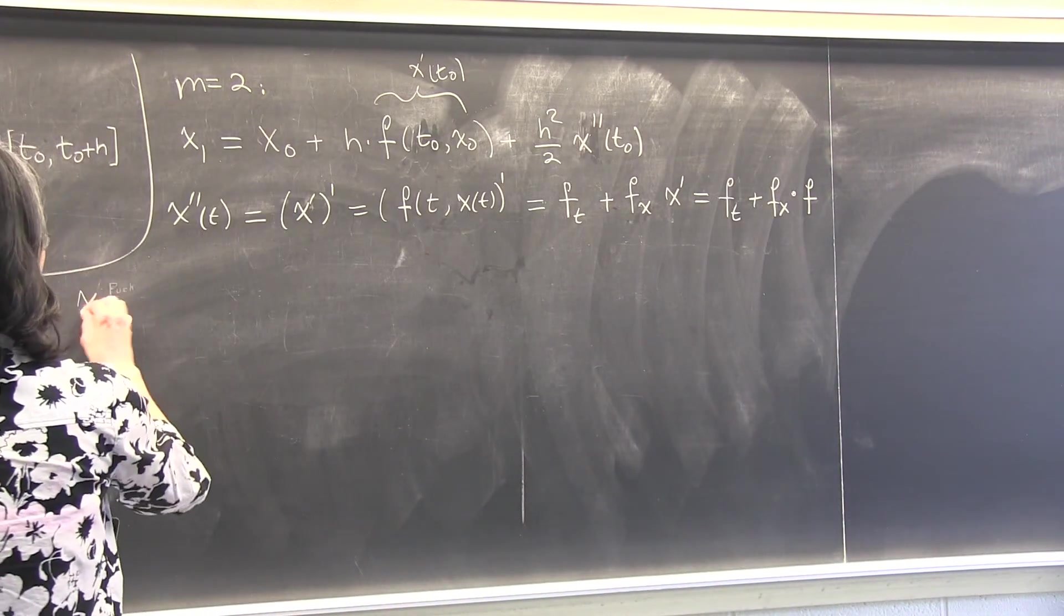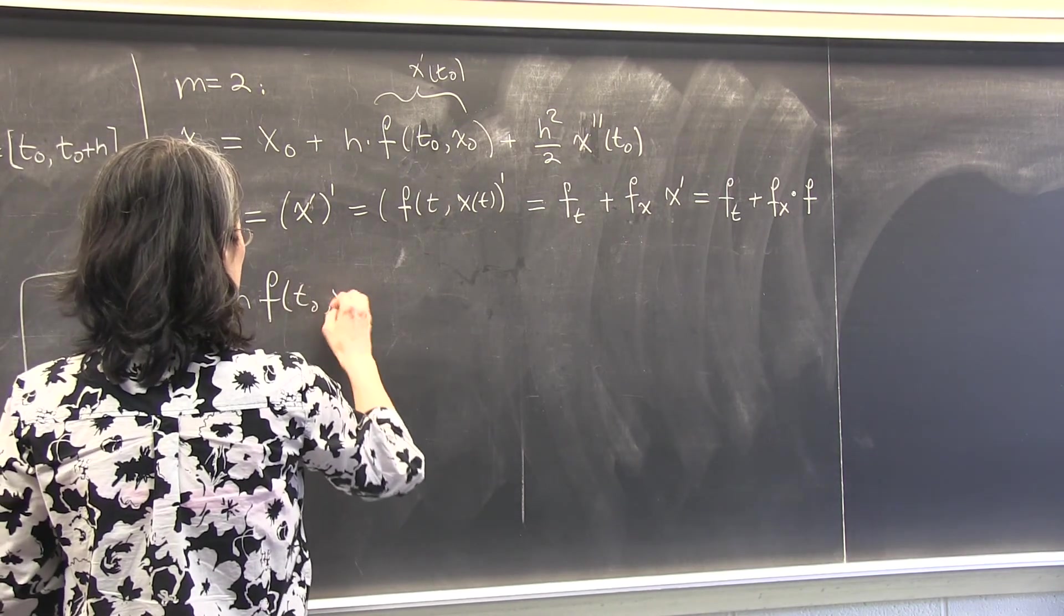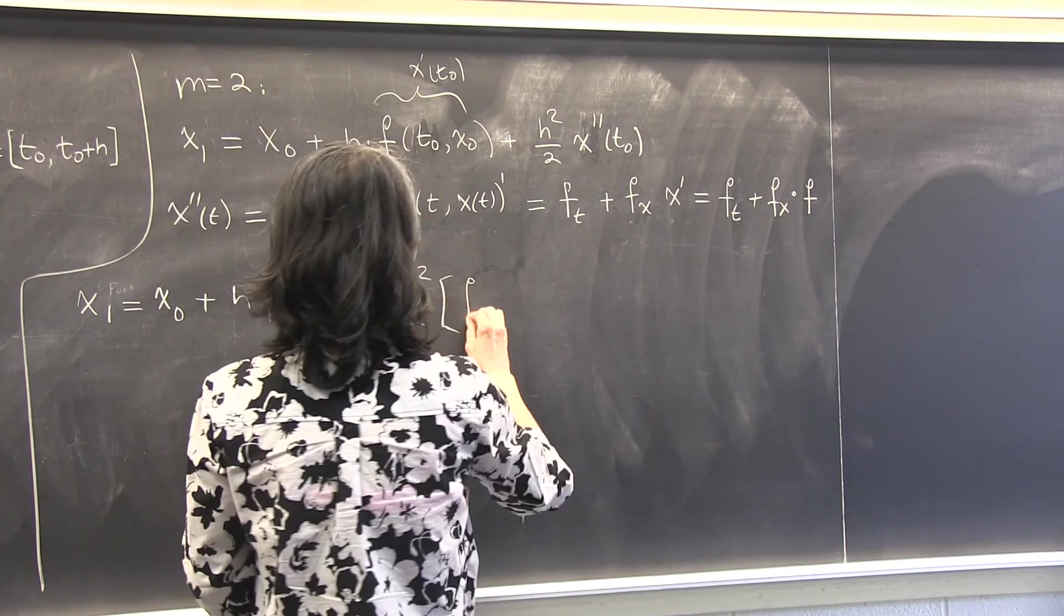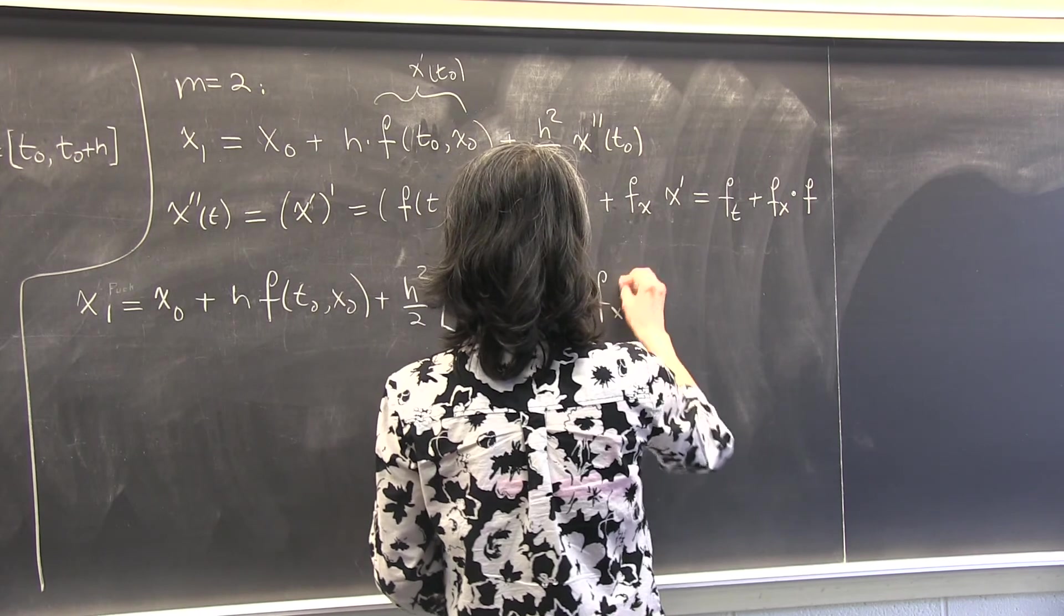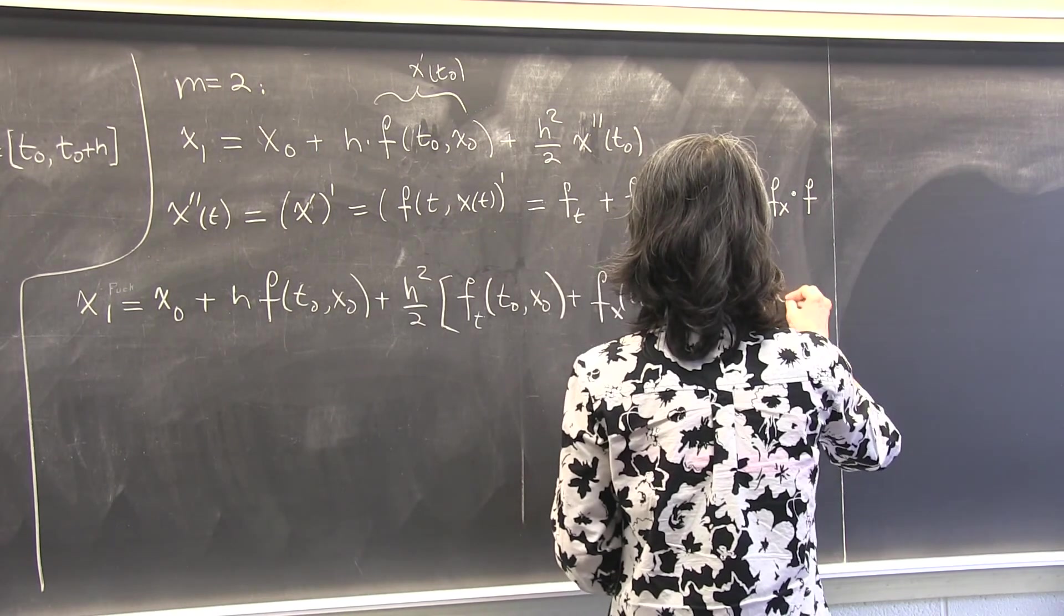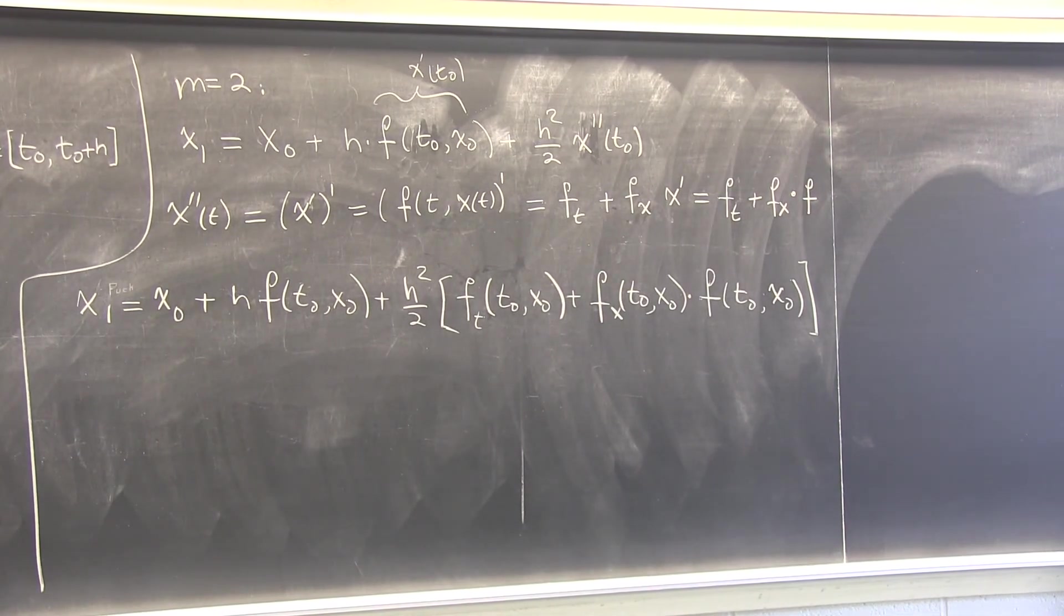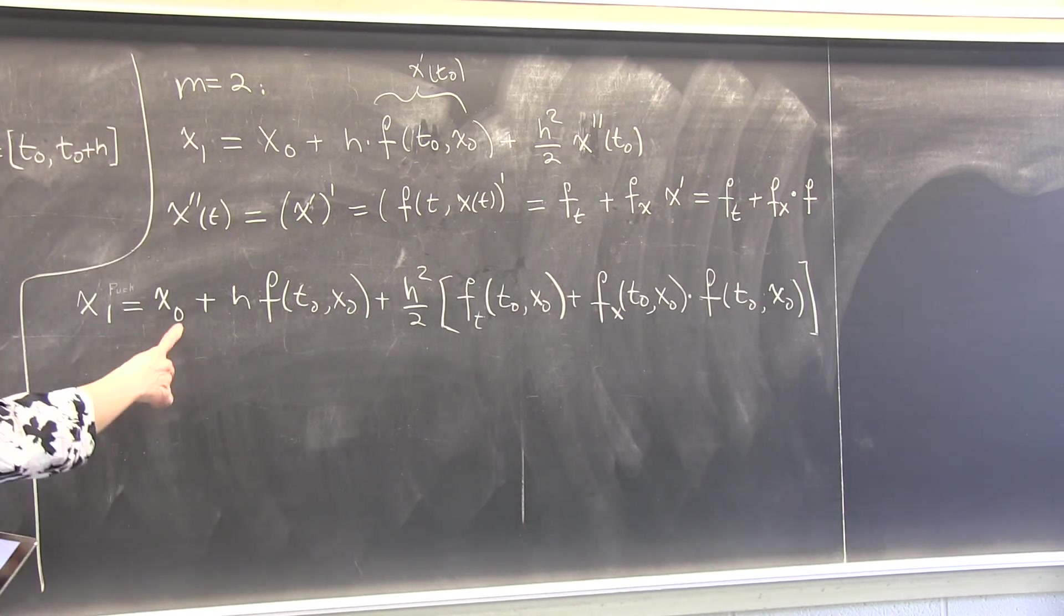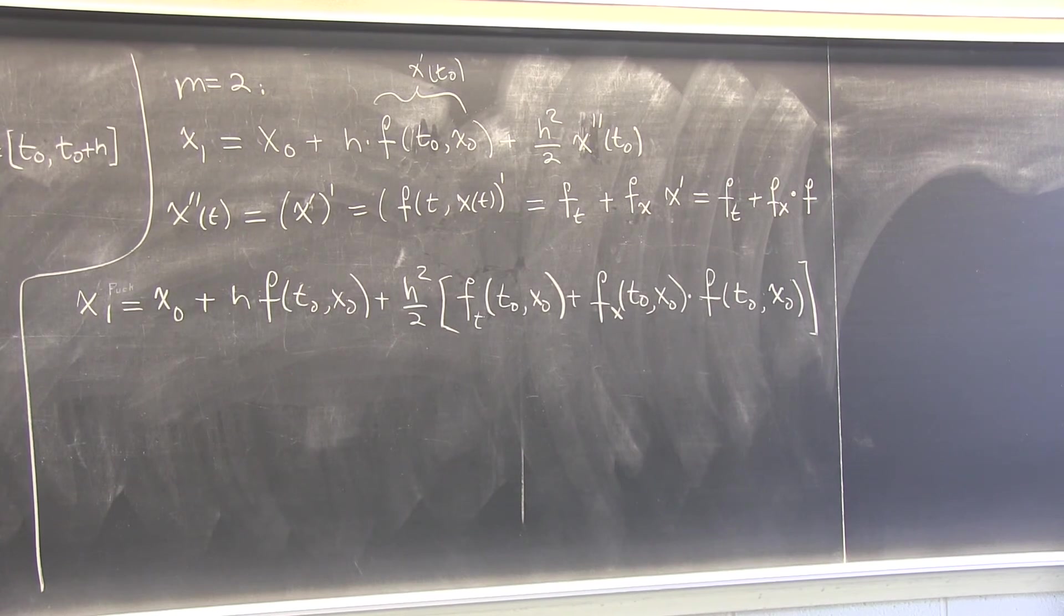So let's plug this back in and write out x1 will equal to x0 plus hf t0 x0 plus h square half of this thing. Be careful, everything has to be evaluated at t0 x0. So, if you want a general iteration for step k, all you need to do is change 0 into k, and change 1 into k plus 1. Which I will not write down, it's obvious.